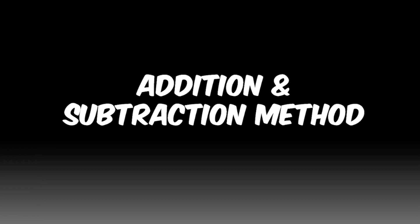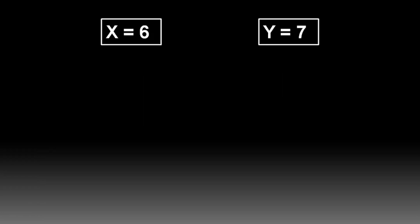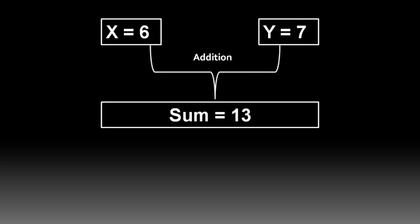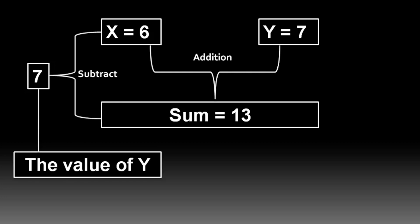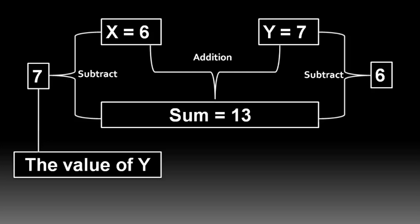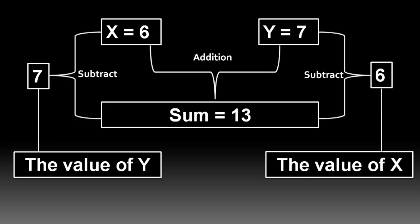Addition-subtraction method: we have X equals 6 and Y equals 7. In this method we add these two values and the sum is subtracted with the values of the two numbers one after another. When we add X and Y the sum is 13. When we subtract the sum with the value of X we get 7, which is the value of Y. Similarly, when we subtract the sum with the value of Y, we get 6, the value of X.